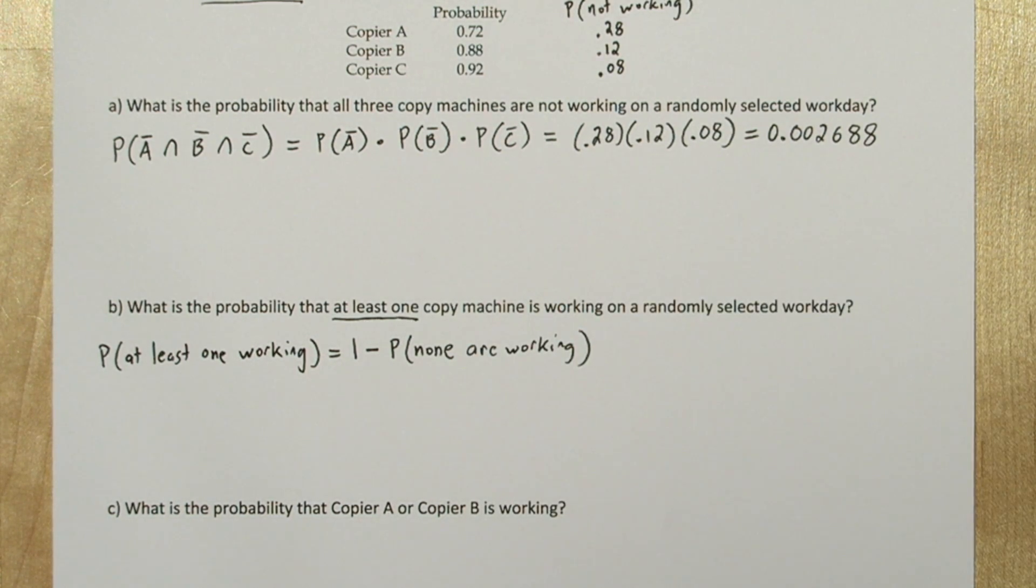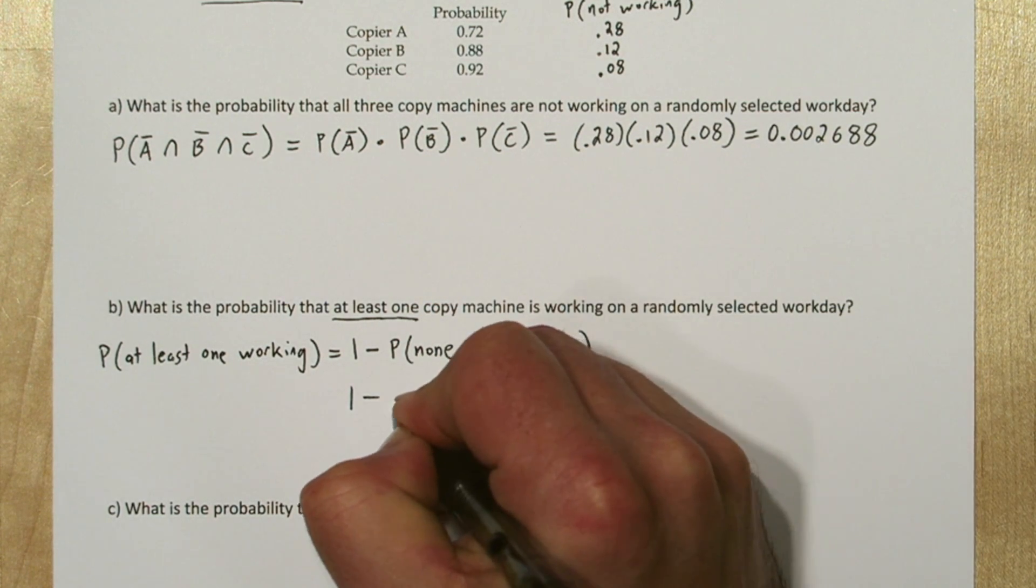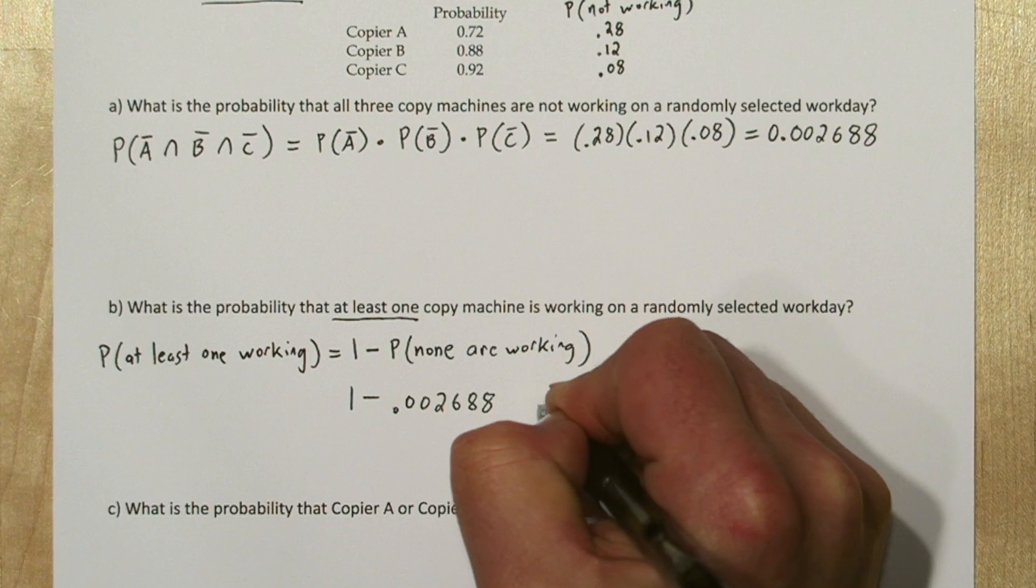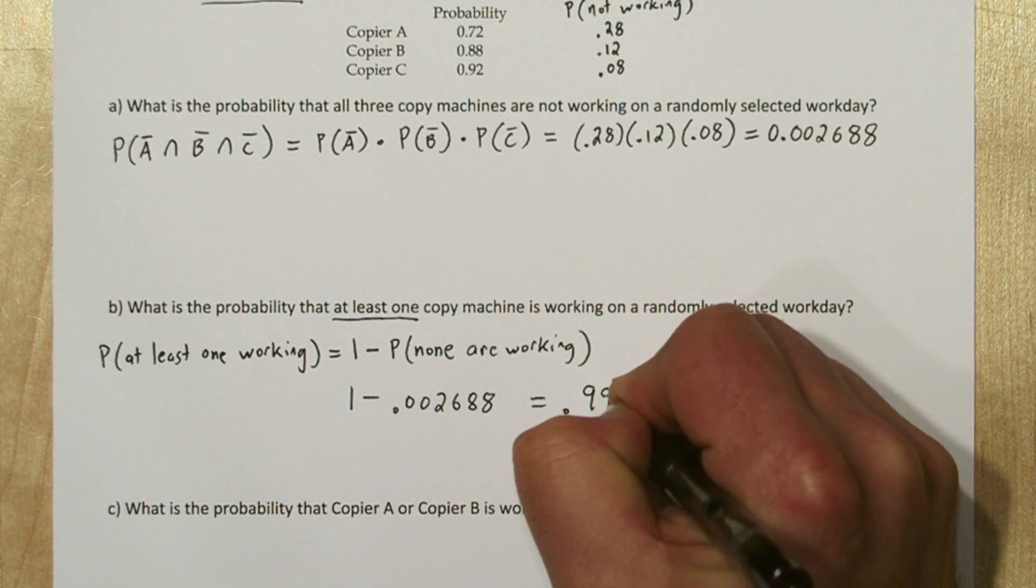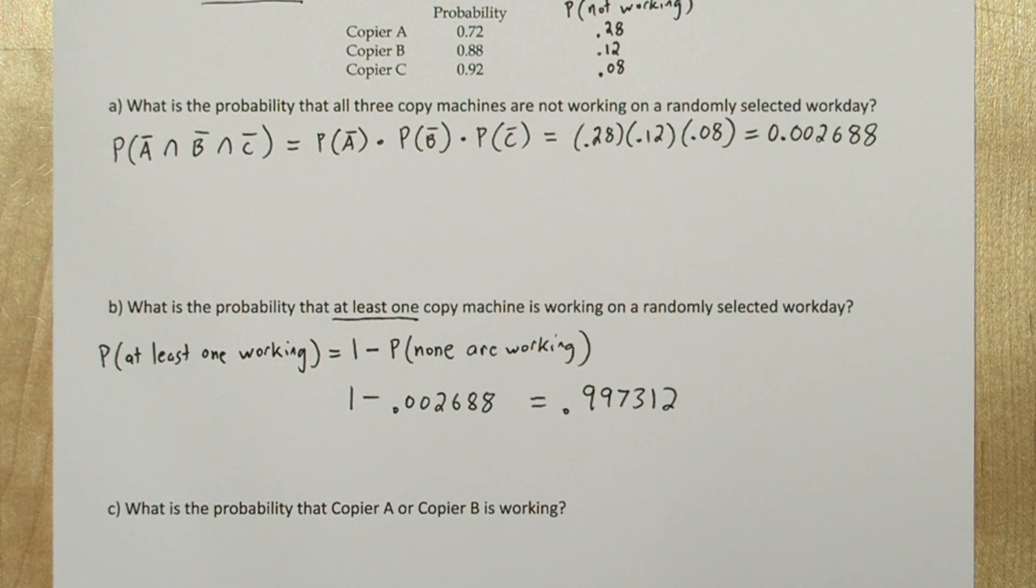The complement of at least one working is none of the machines working. So we can just do one minus the probability of none of the machines working. And we found that probability in part A. So we get 1 minus 0.002688, and we find out that the probability of at least one machine working is 0.997312. That's a high probability, so it's extremely likely at least one of the machines will be working at the office.